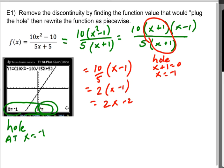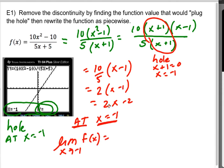What that means is I can figure out what would plug the hole. So at x equals negative 1, essentially, I can't reach negative 1. But what I can find is the limit as x approaches negative 1 of that f(x) using this simplified version. As I approach negative 1, I get a 2 times negative 1 minus 2, which is a negative 4.